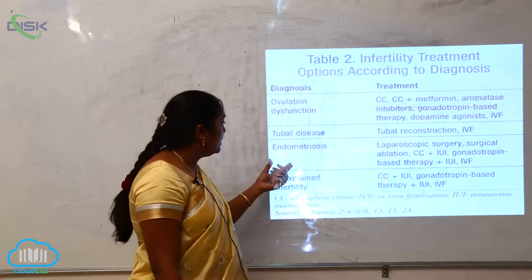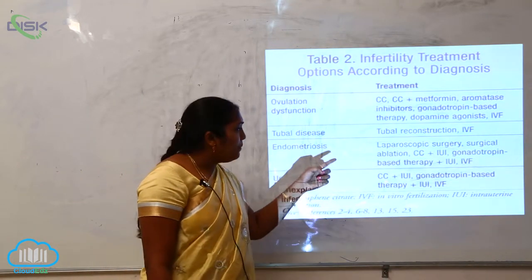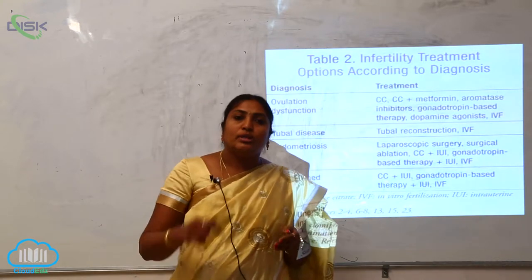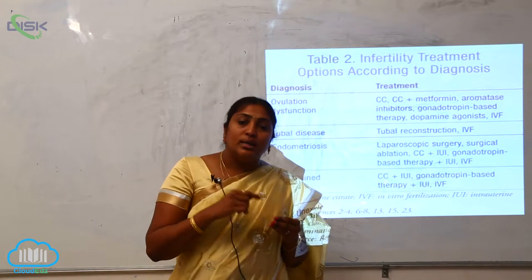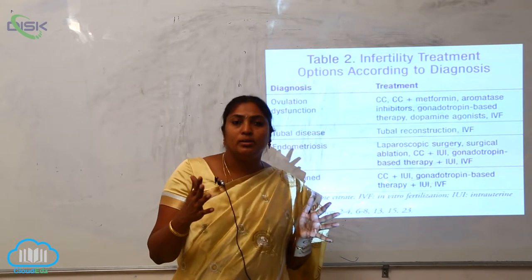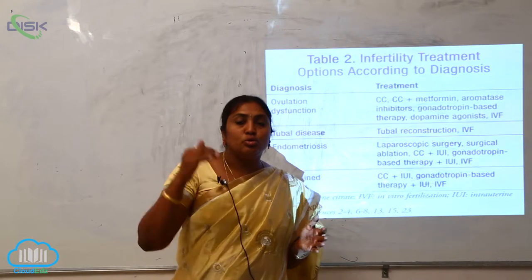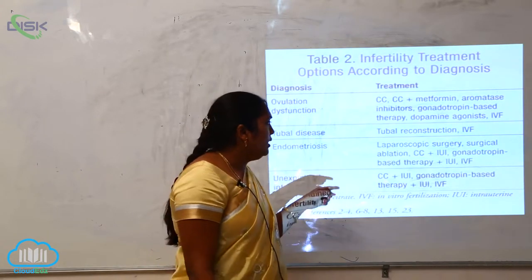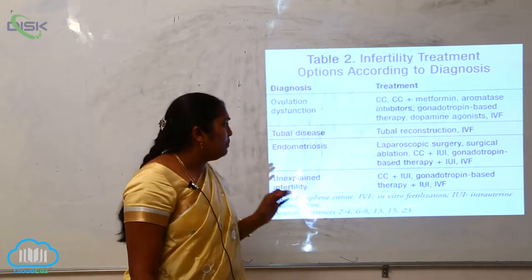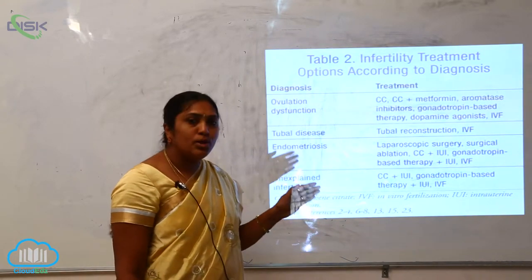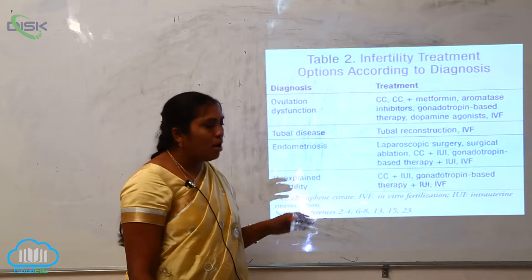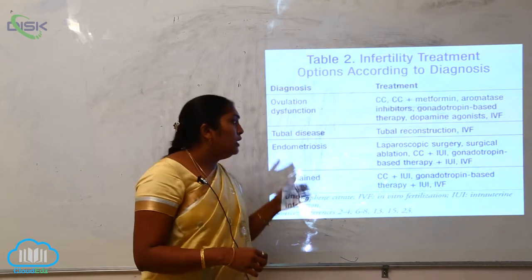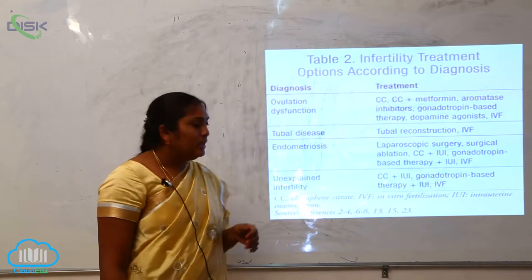Next is endometriosis. Endometriosis is the diagnosis, and the treatment is laparoscopic surgery. Laparoscopic surgery is performed without cutting the skin of the human body — it is done through small incisions. Surgical ablation with CC is also used. This involves the lining of the uterus, and these are the different types of treatments being given for endometriosis.